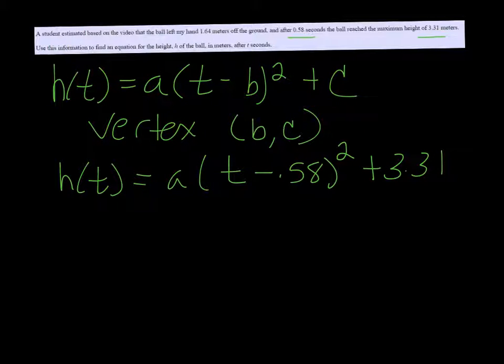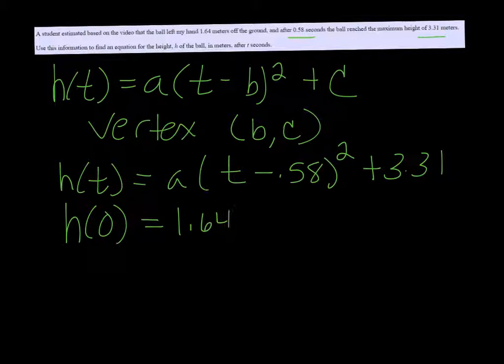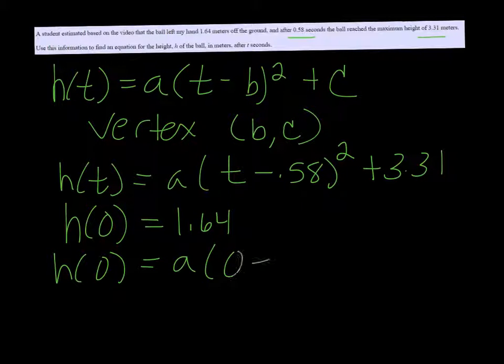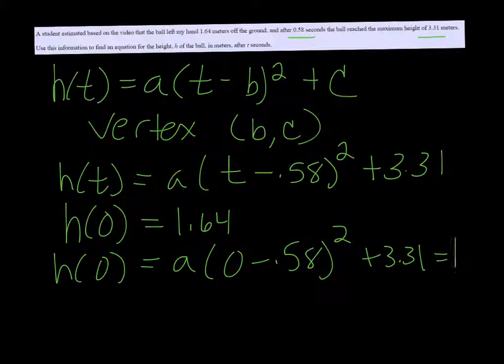We know that at time 0 the height was 1.64, so we can put those two together and do h(0) equals a times (0 minus 0.58) squared plus 3.31, and that equals 1.64.